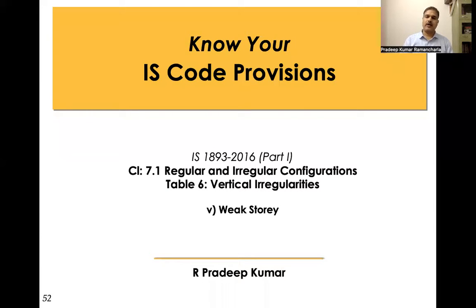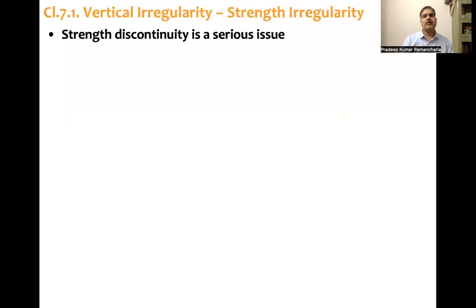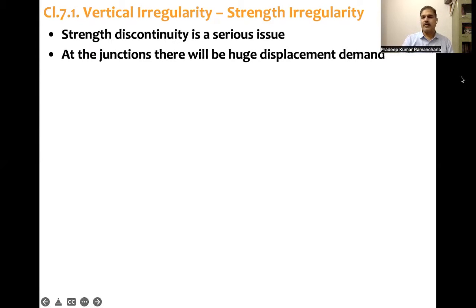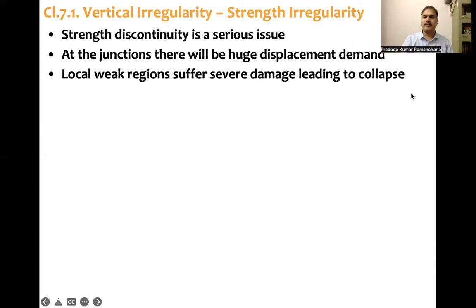Weak story is one of the vertical irregularities. It causes strength discontinuity, which is a serious issue — specifically, lateral strength discontinuity. When there is strength discontinuity at these junctions, there will be huge displacement demand because of the lateral forces. Because of this local weak region, that story will suffer severe damage, sometimes leading to collapse.